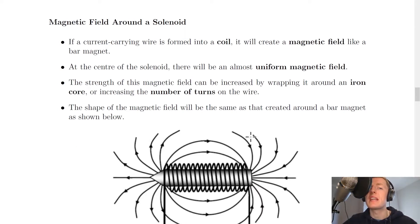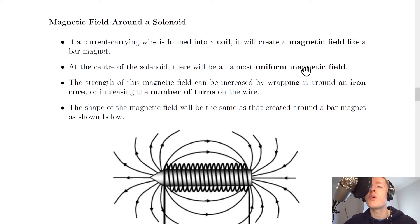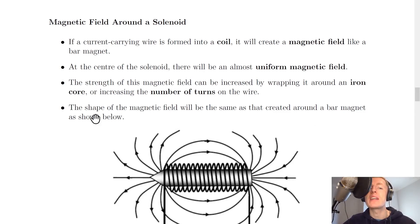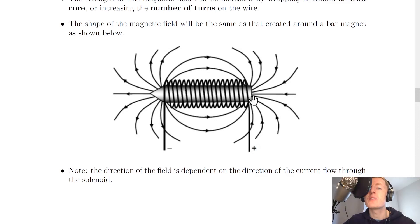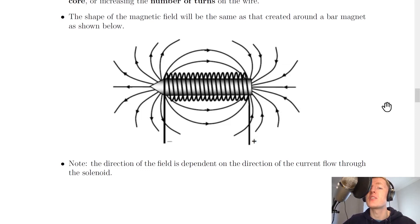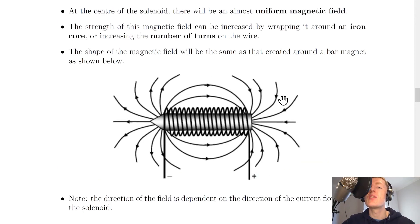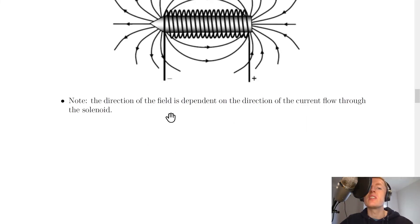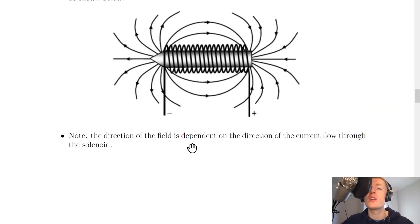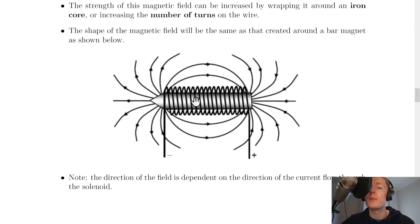Lastly, we're going to look at the magnetic field around a solenoid. If a current-carrying wire is formed into a coil it will create a magnetic field like a bar magnet. At the center of the solenoid there will be an almost uniform magnetic field. The strength can be increased by wrapping it around an iron core or by increasing the number of turns on the wire. The shape of the magnetic field is the same as that created around a bar magnet. The direction of the field is dependent on the direction of the current flow through the solenoid — in this case the uniform magnetic field will be going from right to left.